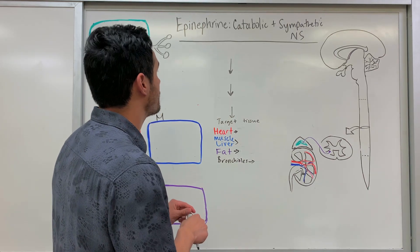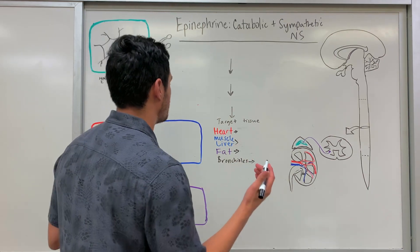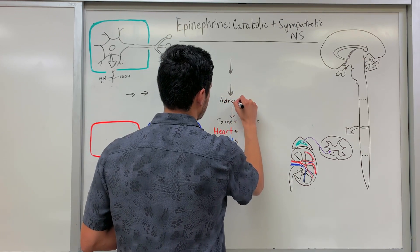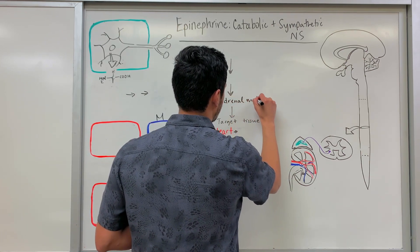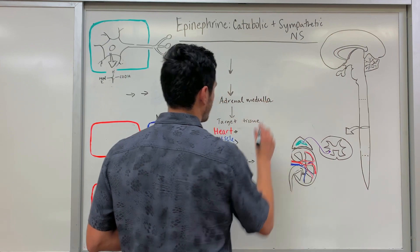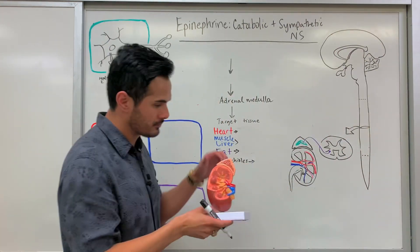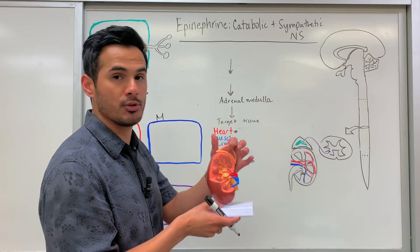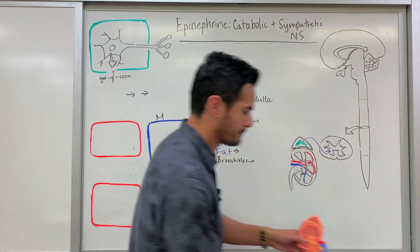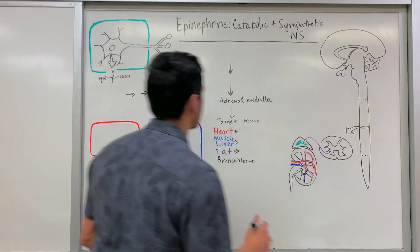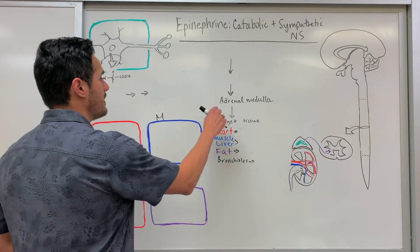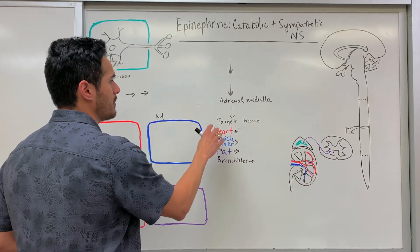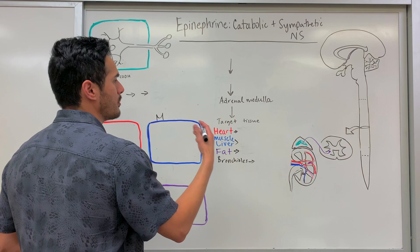The first thing we're going to discuss is where epinephrine is released from — within the adrenal medulla. Key word: adrenal medulla, not the adrenal cortex. Looking at this model of the adrenal gland, the cortex is on the outside and the adrenal medulla is on the inside. Epinephrine is released from the adrenal medulla and then reaches its target tissue.